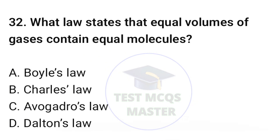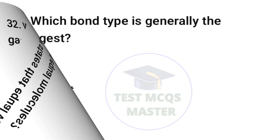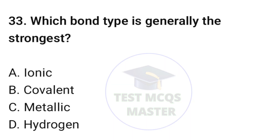Question number thirty-two: what law states that equal volumes of gases contain equal numbers of molecules? The correct option is C, Avogadro's law. Question number thirty-three: which bond type is generally the strongest? The correct option is B, covalent.